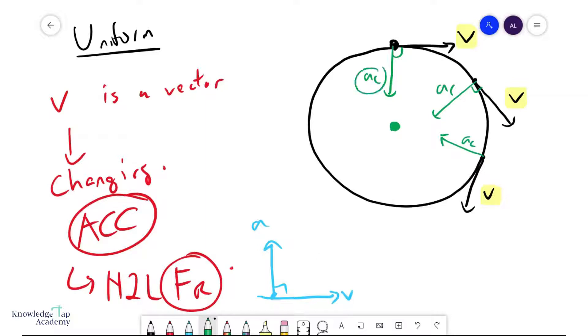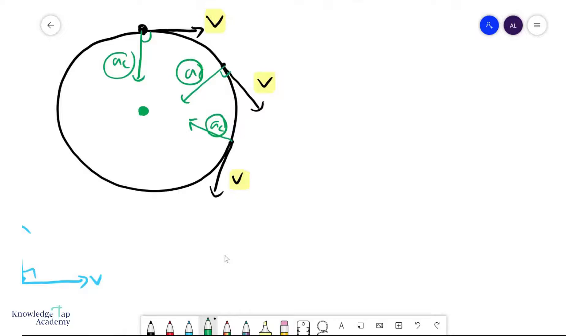And we call this acceleration, we have a special name for it, the centripetal acceleration AC. And AC can be given by the linear speed v squared over r, or it can be expressed as, r is the radius, so I must be clear about that, or it can be expressed as r times omega squared.